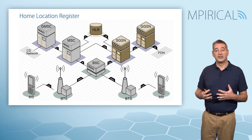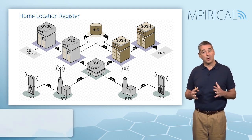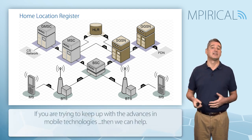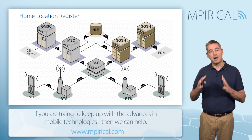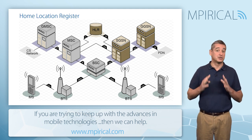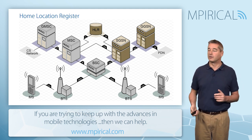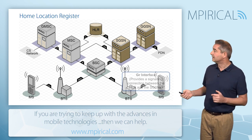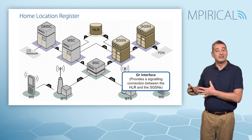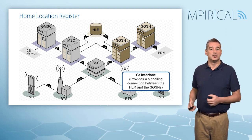The packet switch core network also interconnects with the Home Location Register — the master database containing subscription information about all subscribers. This connection is made via an interface termed the Gr interface.